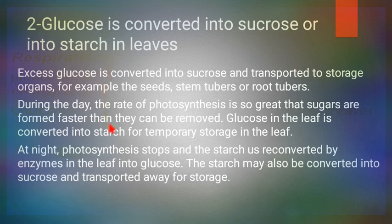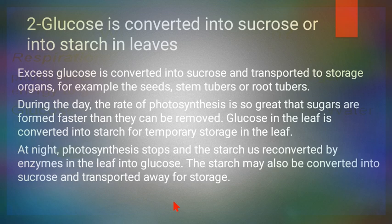In many plants, when excess glucose is formed, that excess glucose is stored temporarily in the form of starch. At nighttime, that starch converts back into glucose and provides energy. So glucose formed during photosynthesis can be converted into sucrose or into starch.